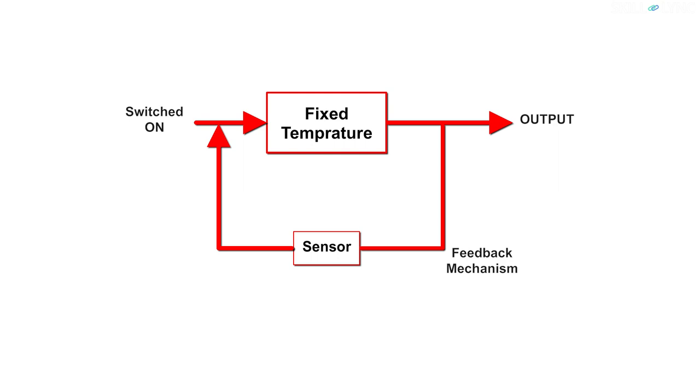The thermostat takes input from its surroundings continuously and checks if the temperature of the surrounding is the value as set in the thermostat. This is done by a feedback mechanism which takes the input from the surrounding and feeds it back to the system via a sensor. Depending on this, the thermostat increases or decreases its temperature to keep the surroundings at a constant fixed temperature. Closed loop systems are more complex when compared to open loop systems.